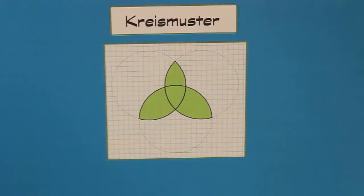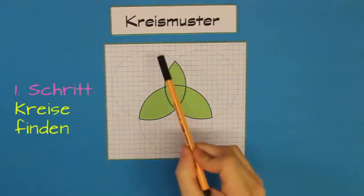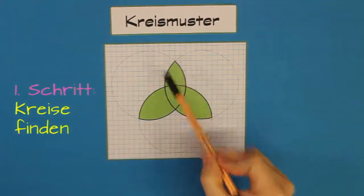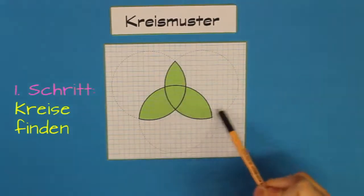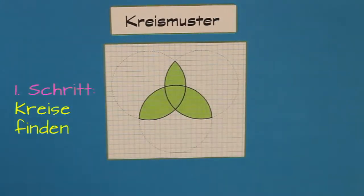Der erste Schritt ist, wir versuchen einmal herauszufinden, aus wie vielen Kreisen das Muster besteht. Das ist meist recht einfach. Dieses Muster besteht zum Beispiel aus einem Kreis hier links, da unten haben wir den zweiten Kreis, und oben rechts daneben haben wir den dritten Kreis. Also das Kreismuster besteht aus drei Kreisen.